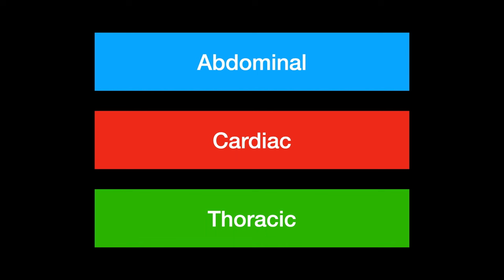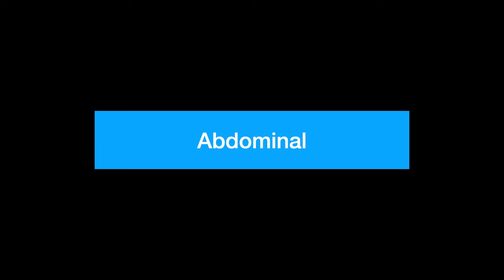The major compartments of the body are the head, chest, pericardial space, belly, retroperitoneum, muscular compartments — often the thighs — and the floor. The FAST exam helps divide those compartments and identify the highest priority for intervention. It's also a good way of breaking it down and teaching it. The first thing is the abdominal compartment of the FAST exam.